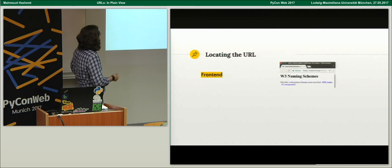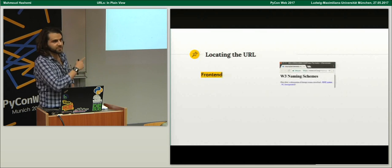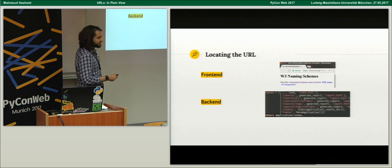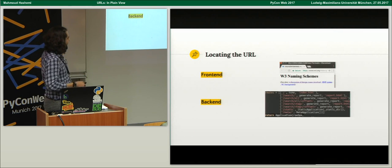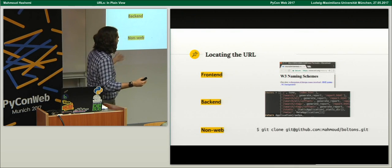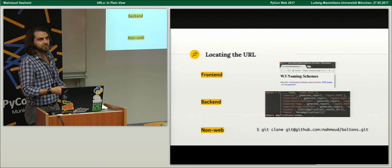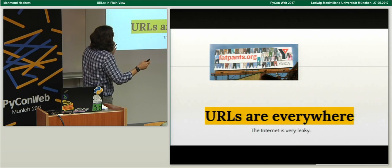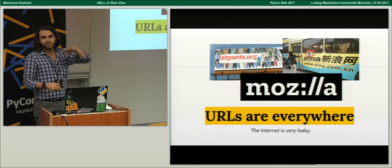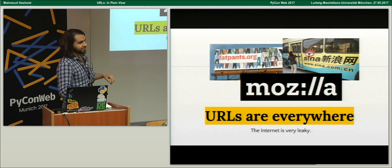Where can we find URLs? We see them in the front end — your browser. W3.org, talking about W3 naming schemes, that was what they were called before they were URLs. You find them in the back end in your routing with Morepath, a nice Python web framework. But you also find them in the non-web — they extend beyond the web. You're going to clone a library using git clone. That's not a web protocol, but it's using a URL. URLs leak everywhere outside the web — on billboards, on buses, and even in the logo of Mozilla. I actually really like that logo, probably because I love URLs.